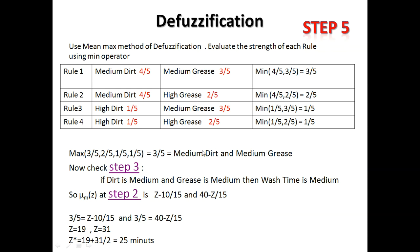The value 3/5 corresponds to the rule for medium dirt and medium grease. So given dirt at 60% and grease at 70%, the winning rule indicates the wash time should be medium. We now go back to step three to check: if dirt is medium and grease is medium, what is the wash time?